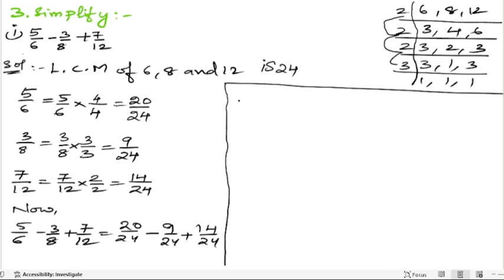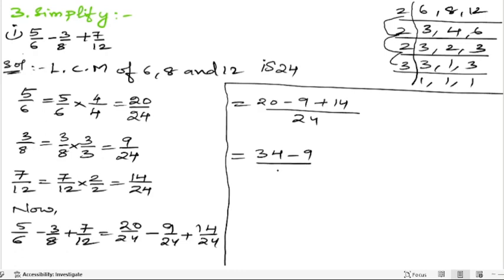Since the denominator is the same (24), we combine the numerators: 20 minus 9 plus 14. That gives 20 plus 14 = 34, then 34 minus 9 = 25. So the answer is 25/24.